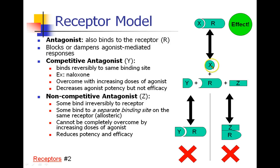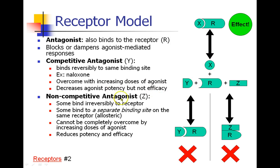If I give a whole ton of fentanyl, I can still achieve the same amount of pain relief, but I'm going to need a lot more fentanyl. So I've changed potency, but I haven't really changed efficacy. The key to remember here is that these are reversible processes — that's competitive antagonism.